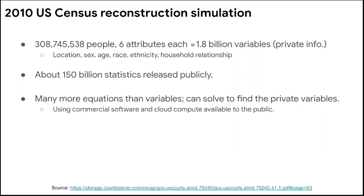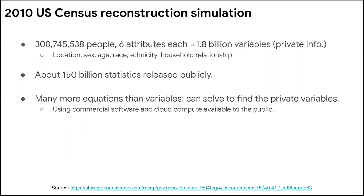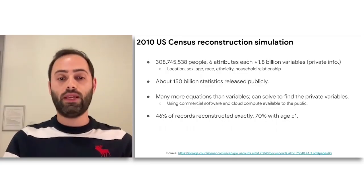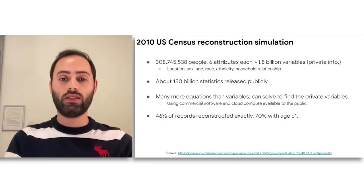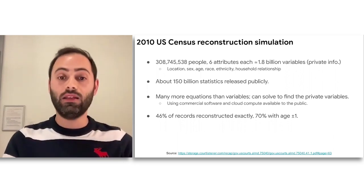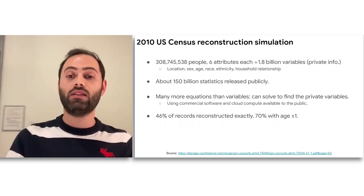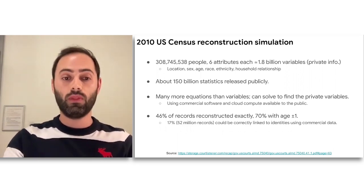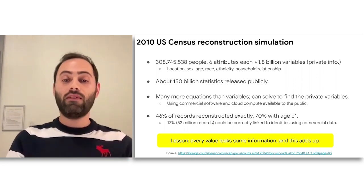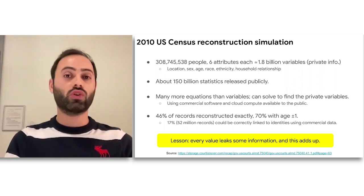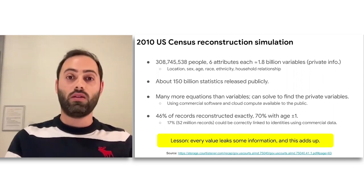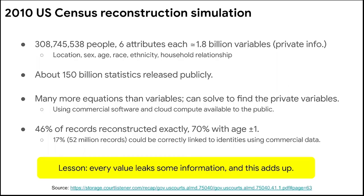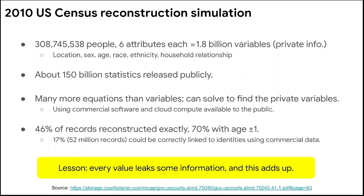What we could show is that because we have many more equations than variables, we can solve to find some of the private variables. For instance, we can show that about 46% of the records in the original dataset can be reconstructed exactly, and about 70% up to plus or minus one in terms of estimating the age of individuals. This is all to say that every little value we release, whether structured or unstructured, when it gets to scale, every little value leaks some information and this whole thing adds up.